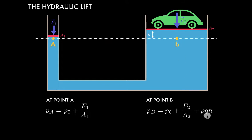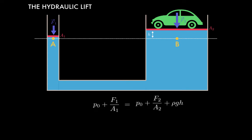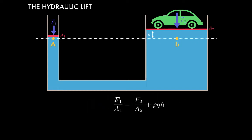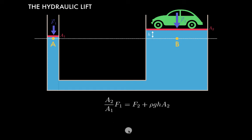Since points A and B lie on the same horizontal line in the connected fluid, we can set the pressure at A equal to the pressure at B and substitute in our two expressions. On the left we have the air pressure plus F1 over A1, and on the right our expression for the pressure at point B. The air pressure cancels from both sides, and we then multiply both sides by A2, which cancels one A2 on the right-hand side. Dropping the parentheses and combining terms, we end up with our working expression.